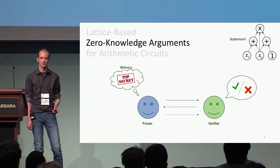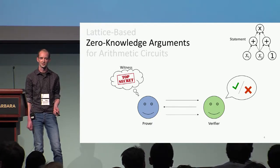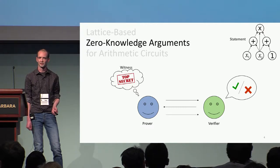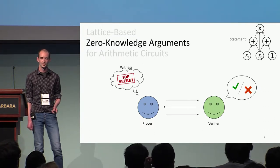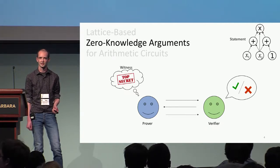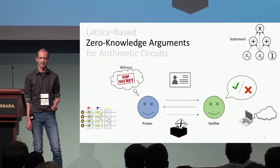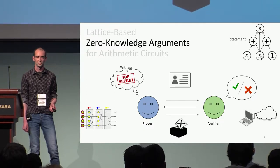Now on to the zero-knowledge part of the title. In zero-knowledge proofs, we have two parties: a prover and a verifier. The prover would like to convince the verifier that some statement is true without revealing any extra information. In particular, the prover might have a secret witness they don't want the verifier to learn about. The prover and verifier interact, and the verifier accepts or rejects depending on whether they were convinced. This has a ton of applications like mix-nets, e-voting, anonymous identification, and verifiable computing.